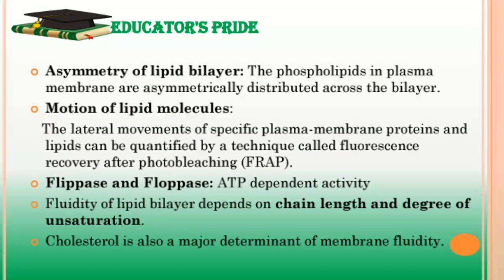Phospholipids in the plasma membrane are present asymmetrically across the bilayer. For example, in human erythrocytes, phospholipids such as sphingomyelin and phosphatidylcholine are mostly found in the extracytoplasmic leaflet, whereas phosphatidylserine and phosphatidylethanolamine are present on the cytoplasmic face.